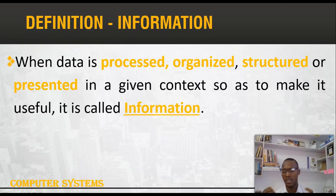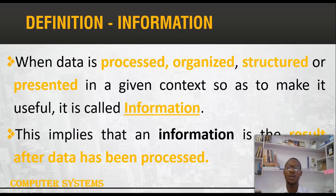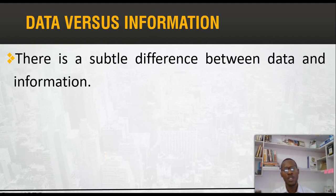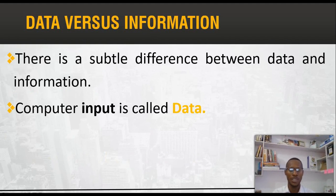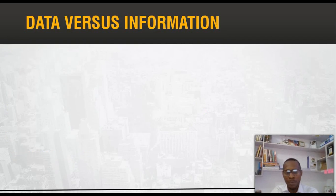When data like text are being processed and organized in a given context to become useful to the user, we call it information. In other words, information is the result obtained after data has been processed. So to make a clear difference: computer input is called data, and the output obtained from the data after being processed is called information.